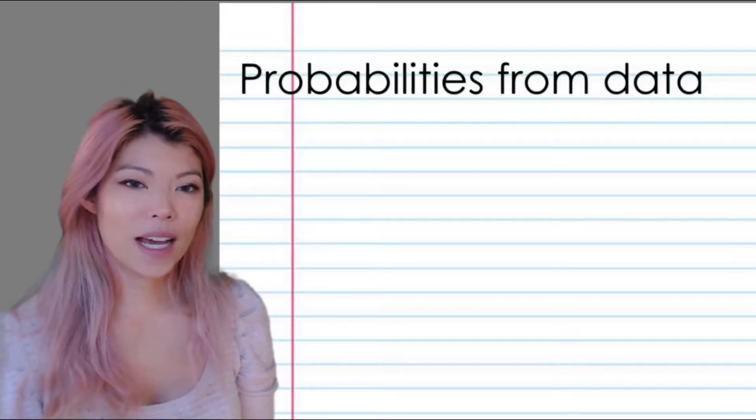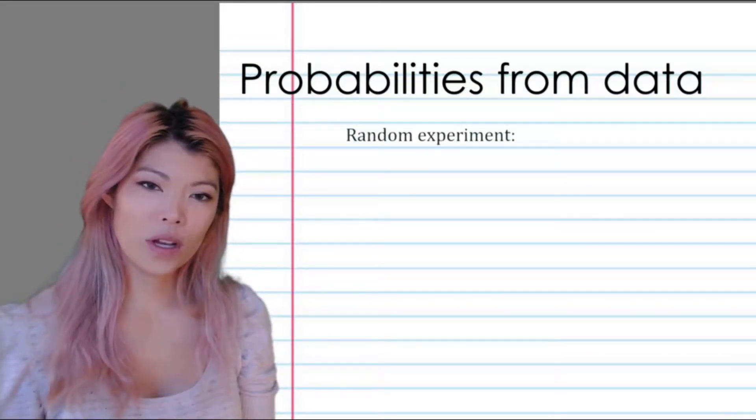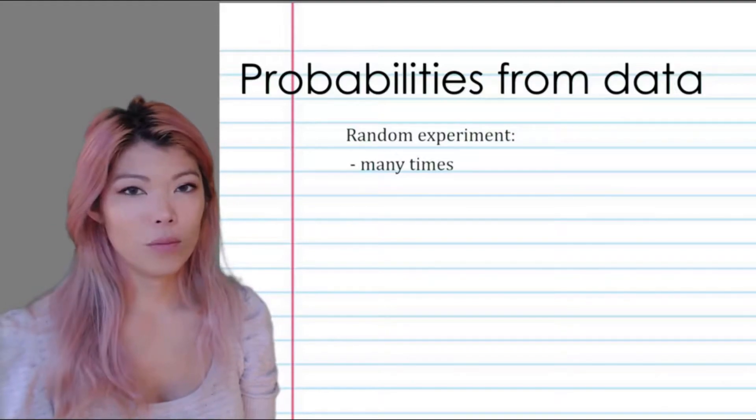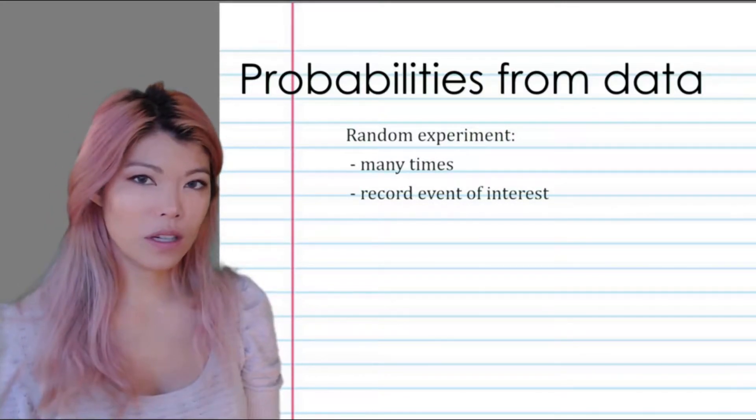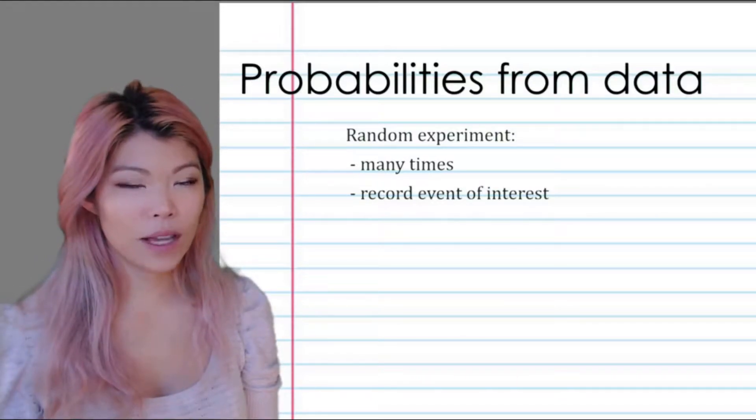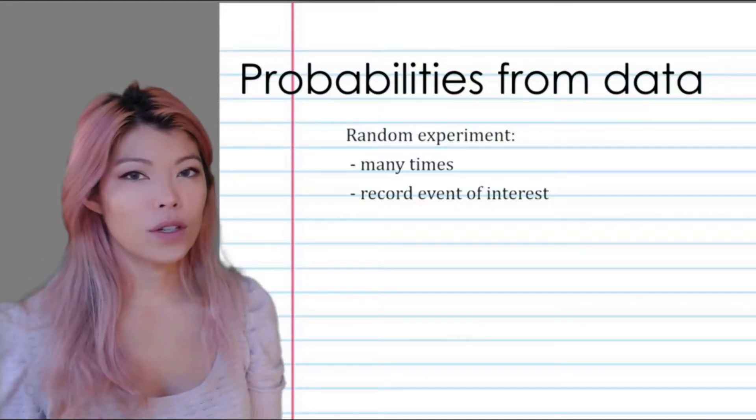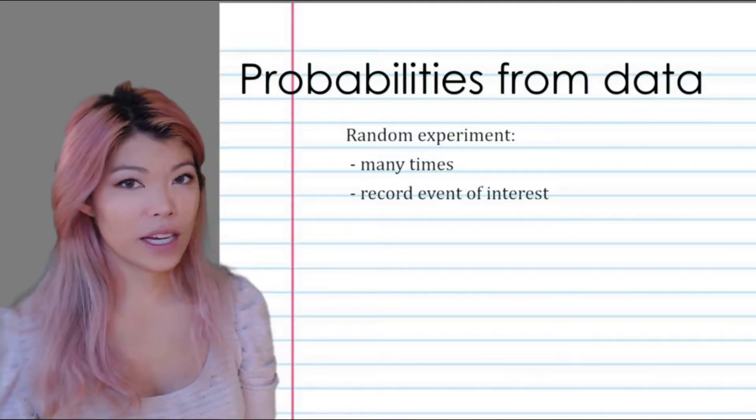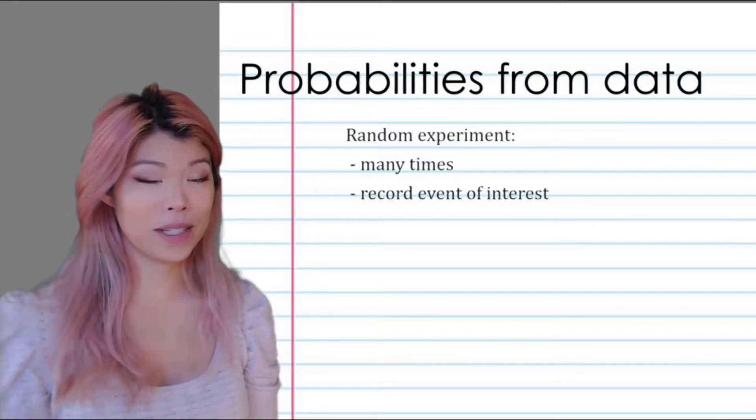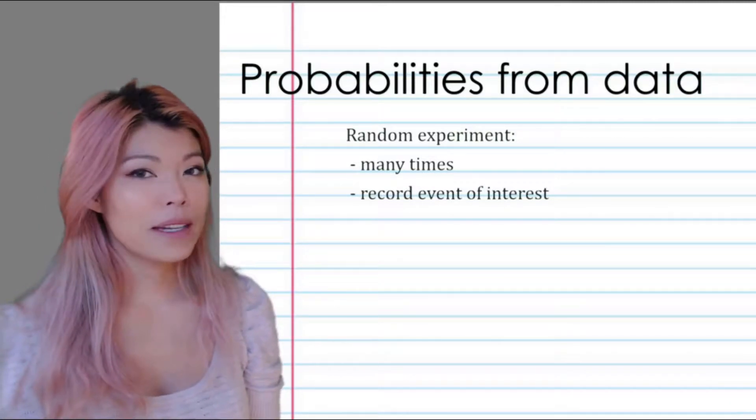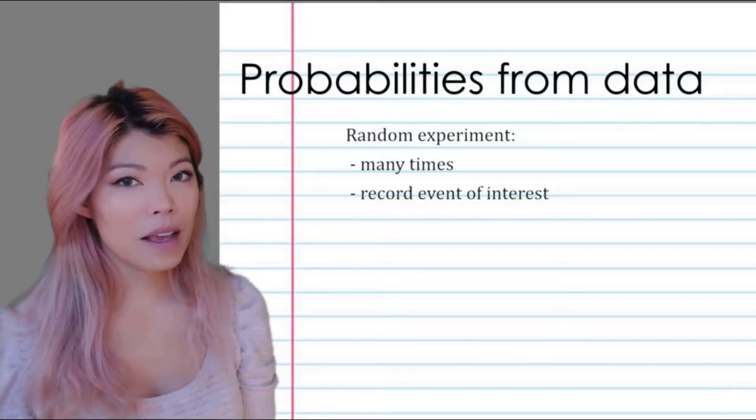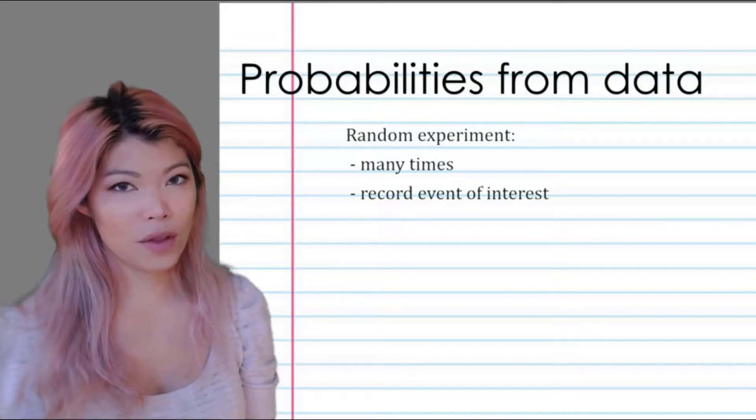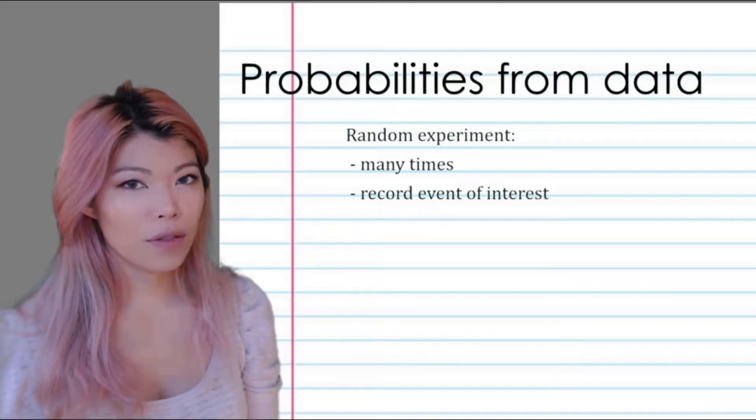Probabilities from data: This is when we conduct experiments. The more times we do it, the more accurate it is. We record what we want. For example, let's say we wanted tails and we're tossing a coin. If we toss the coin once and get tails, it could indicate 100% chance of obtaining tails, but that is not very accurate. If we toss the coin three times and obtain two tails out of three times, that'll be two out of three, but that's still not very accurate.